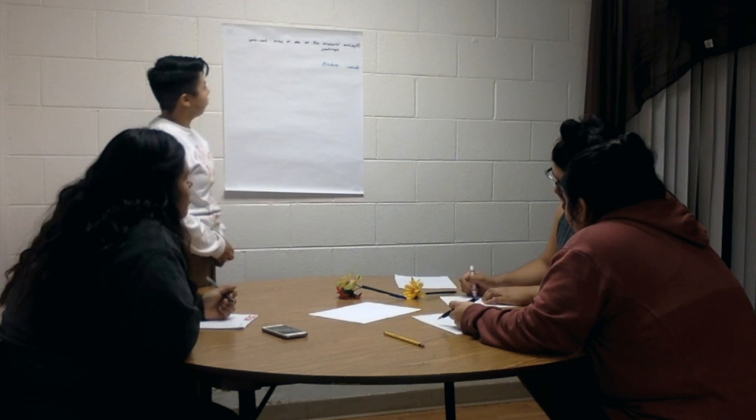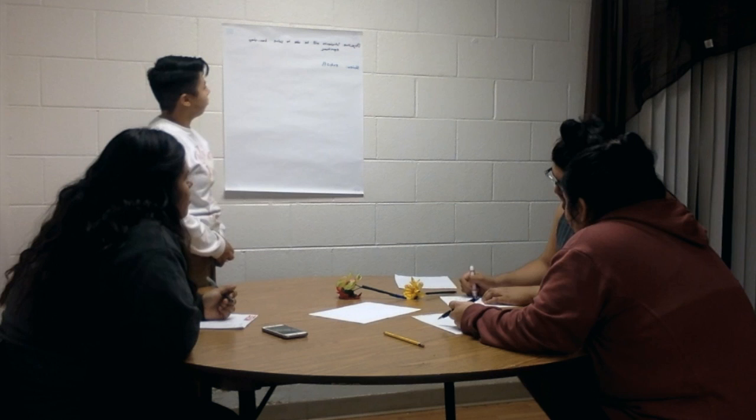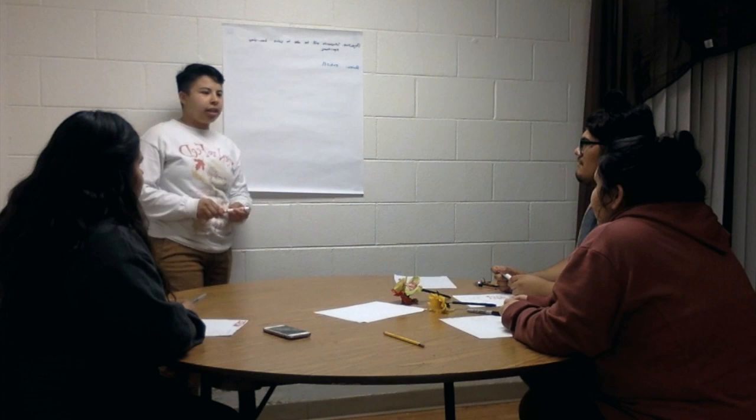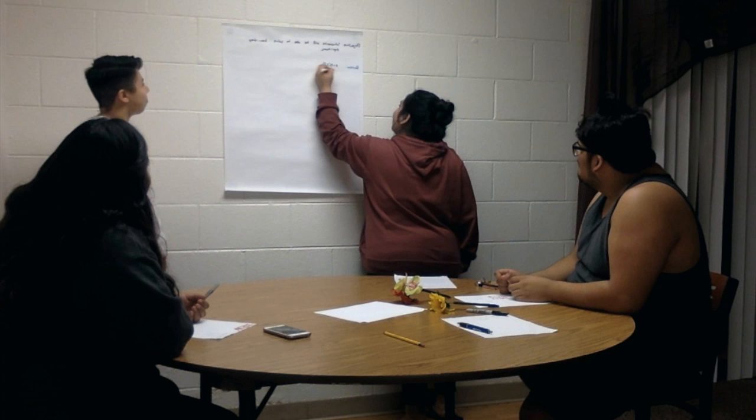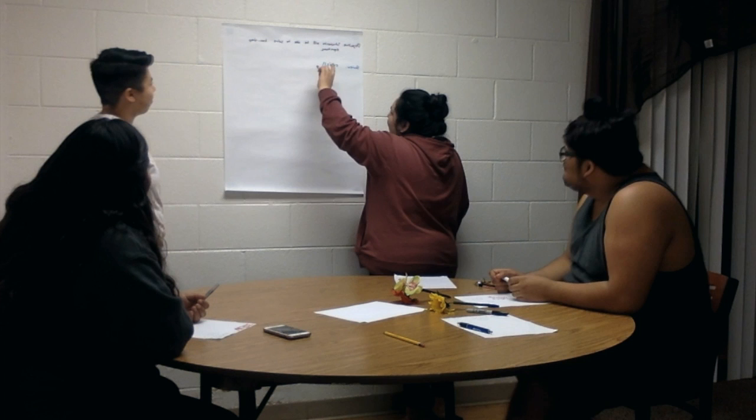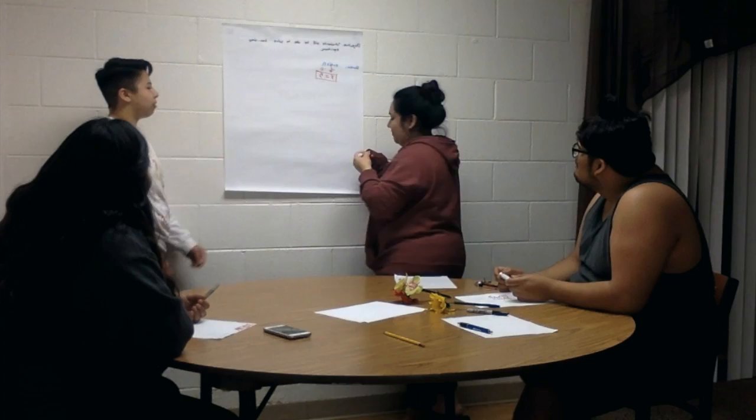What did you get? Does anyone want to come up here and show me how they did it? Adriana? So I subtracted 6 from both sides, and then you subtract 6 from 11, and I got 5. Perfect. Thank you for coming up.